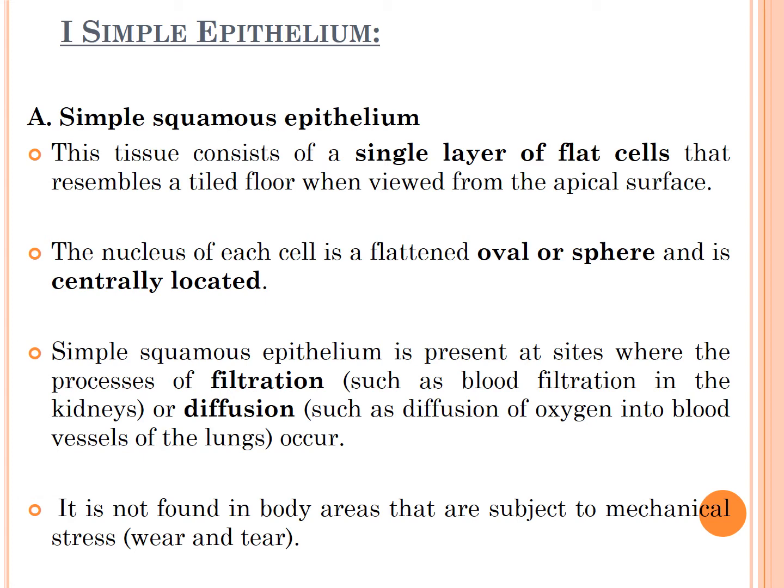Simple squamous epithelium is the first type of simple epithelium. It consists of a single layer of flat cells. 'Simple' means it contains a single layer, and 'squamous' means it contains flat cells that resemble a tiled floor when viewed from the apical surface. The nucleus is generally present in the center.